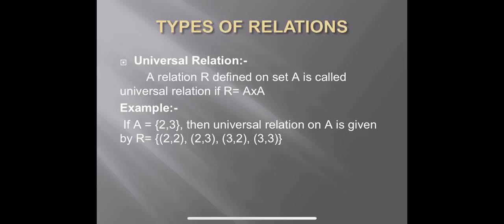if R is equal to A cross A. Remember, this is the largest relation. One more thing: if the relation R is from A to B, then the universal relation will be equal to A cross B, the Cartesian product A cross B. Let us take an example: if set A equals {2, 3}, then the universal relation